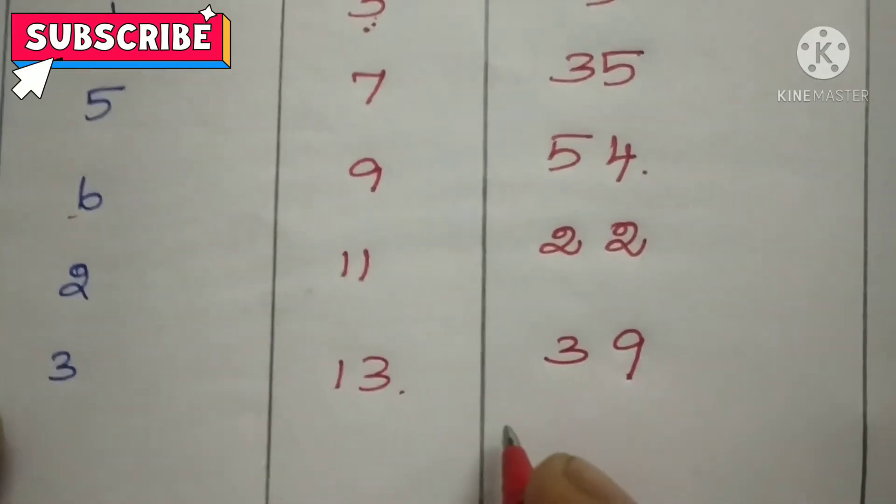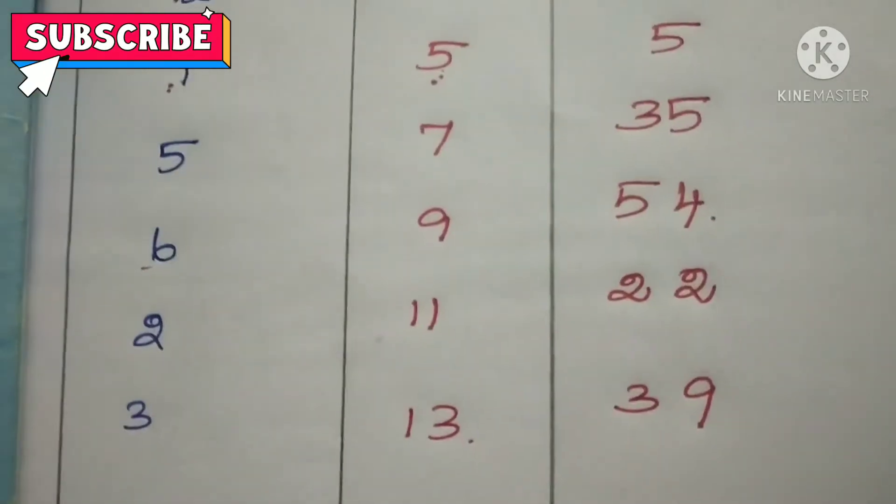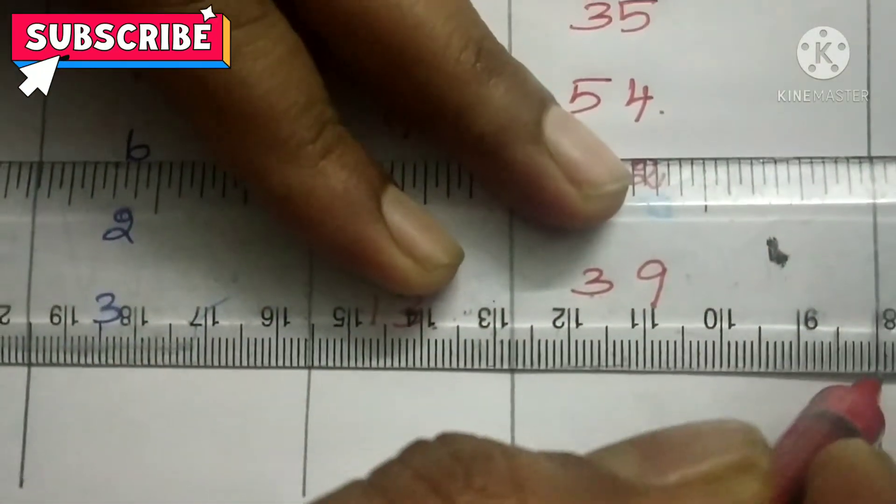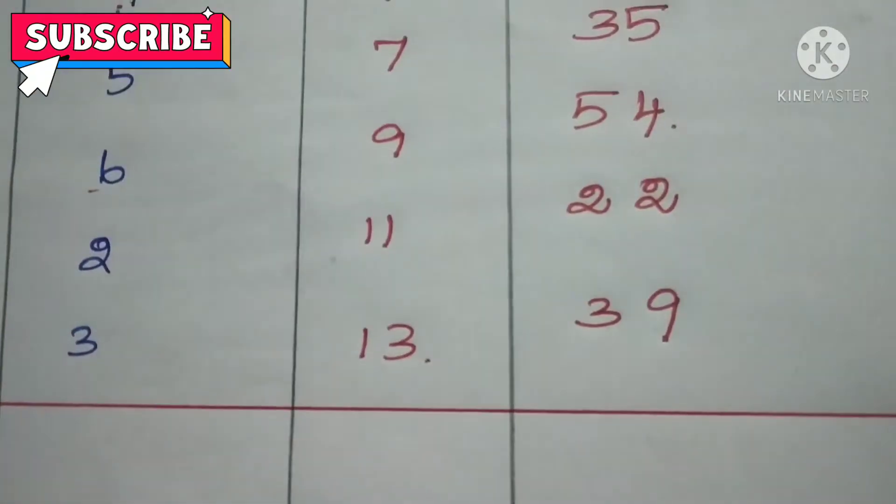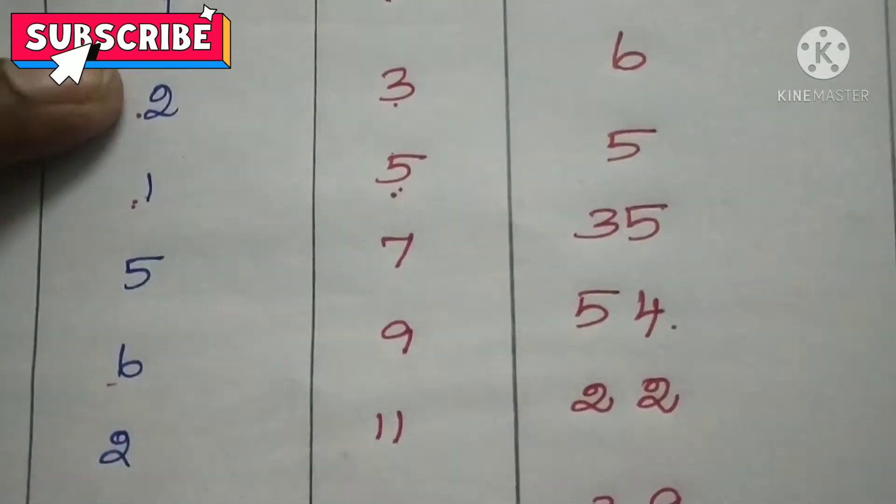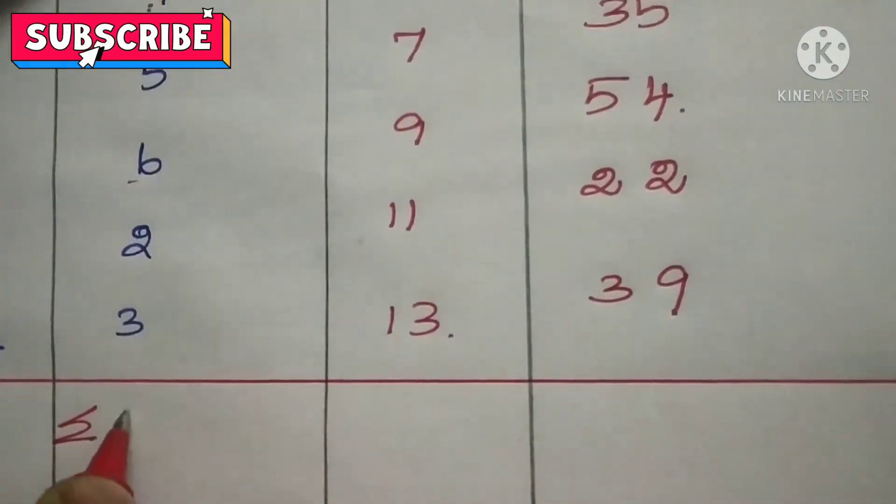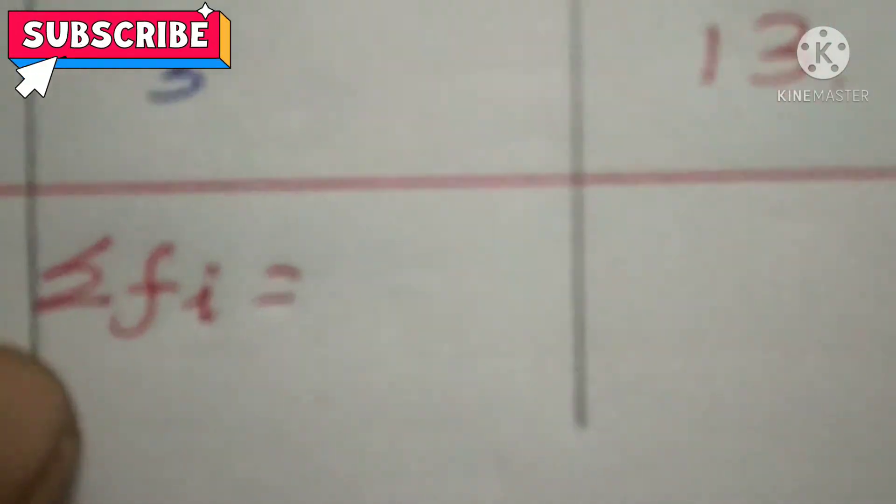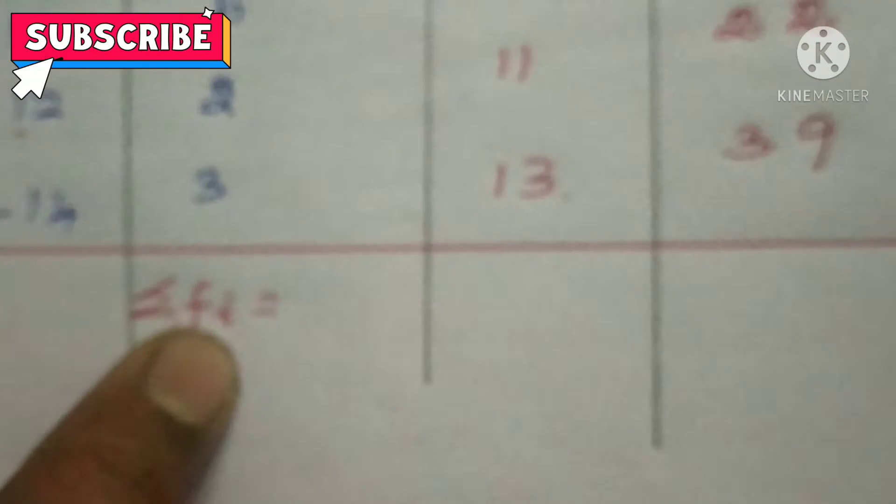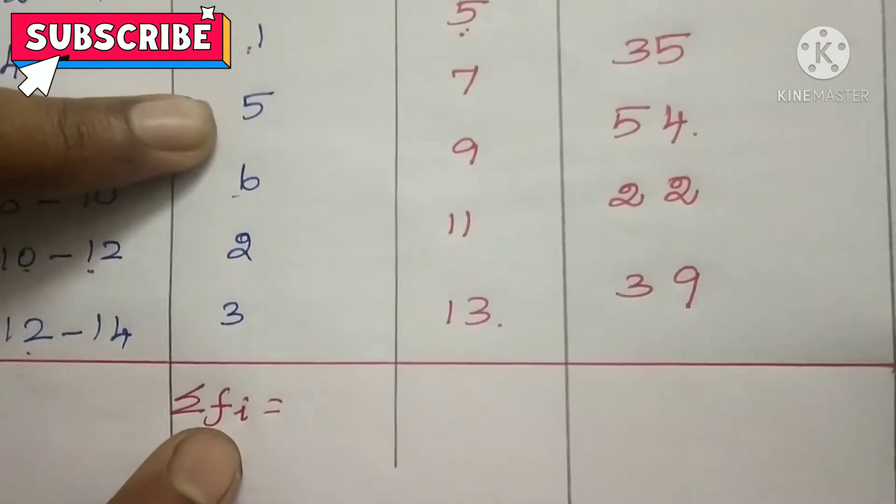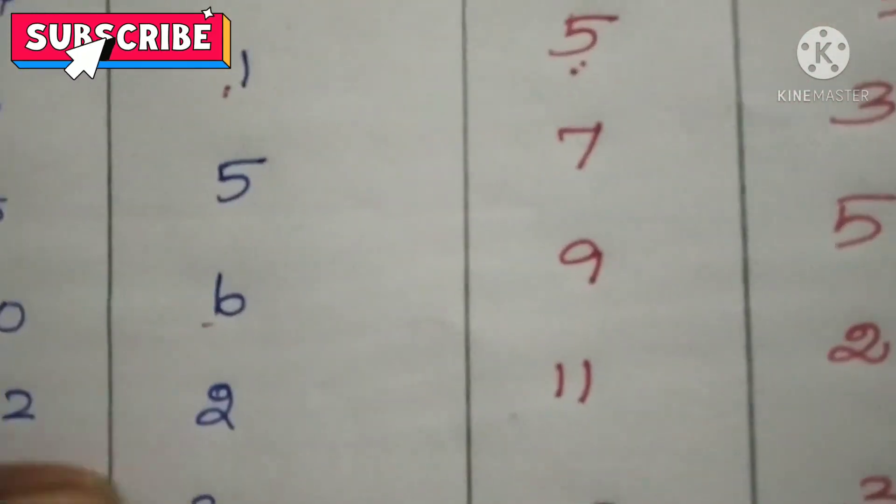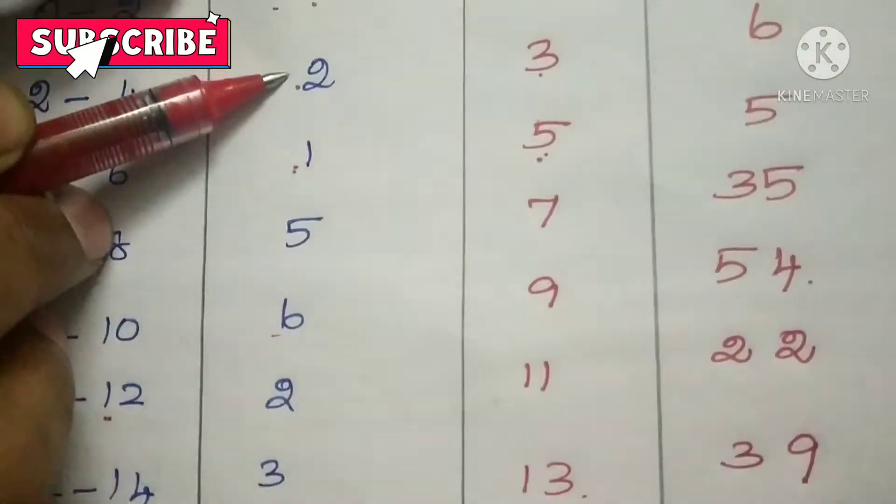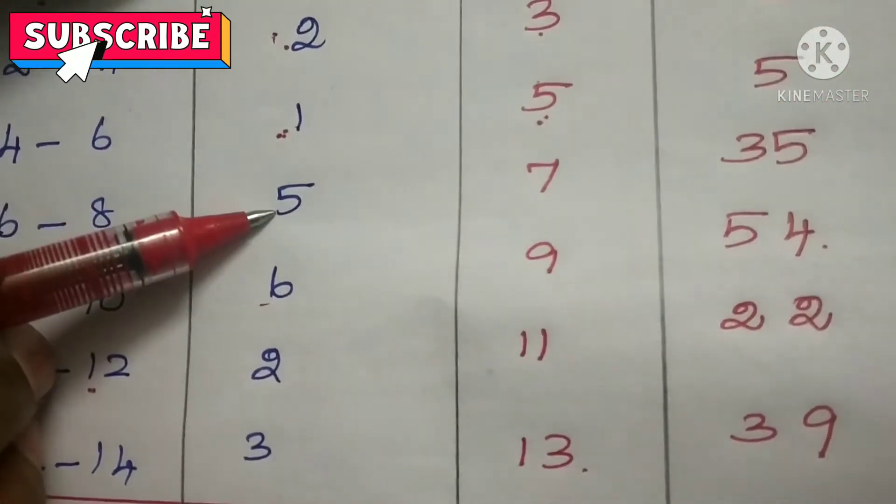Then you have to add the frequency. That is sigma Fi. Sigma means sum of. Sigma is denoted the sum of F1 plus F2 plus F3 plus F4 plus F5 plus F6 plus F7. That is 1 plus 2 is 3. 3 plus 1 is 4. 4 plus 5 is 9. 9 plus 6 is 15.